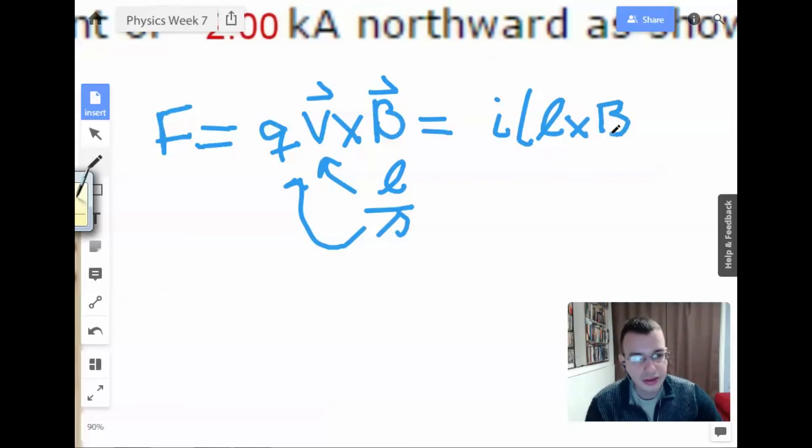Where instead of having meters per second, we just have meters. And now we've changed our Q to Q per second, i.e., current. So then the direction of L will be the direction of current. So I guess I could really move the L over here and then put the vector on the I, but you get the idea.